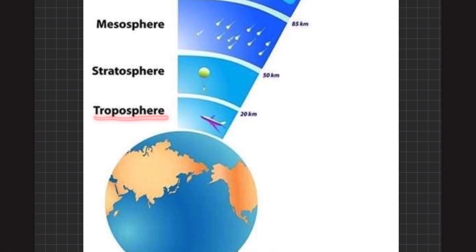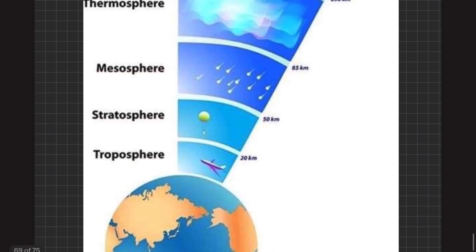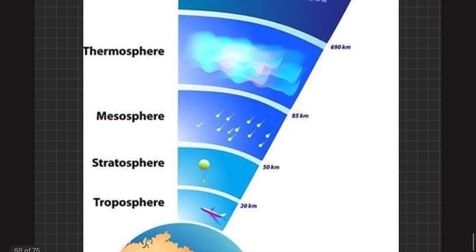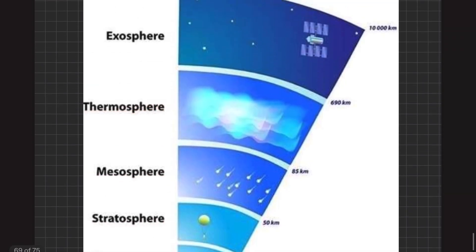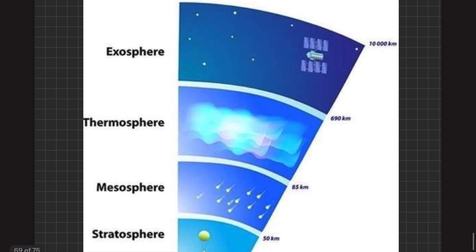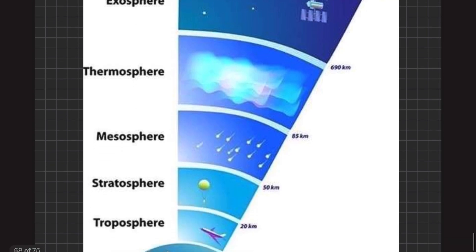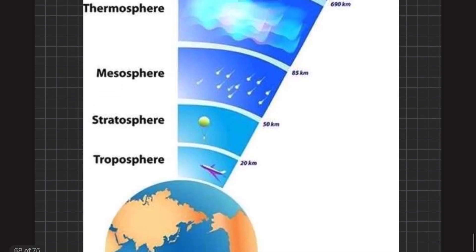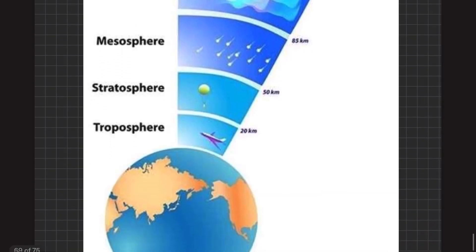Vertically, the atmosphere is divided into different layers: troposphere, stratosphere, mesosphere, thermosphere, and finally exosphere. The study of these different layers is known as the structure of the atmosphere.